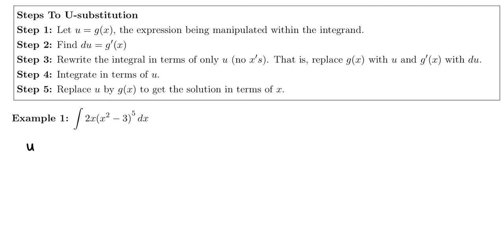I'm going to first start by calling something u. So u is x with whatever is nearby that's getting manipulated. I have two factors here. The first factor is 2x, and I have x squared minus 3, which is being raised to the fifth. The factor that's being manipulated is this second factor. So I'm going to call u equals x squared minus 3. It's being manipulated because it's being raised to the fifth power.